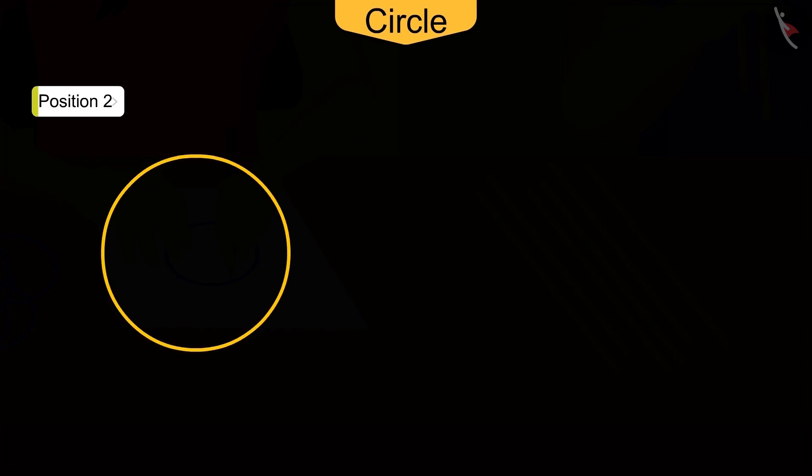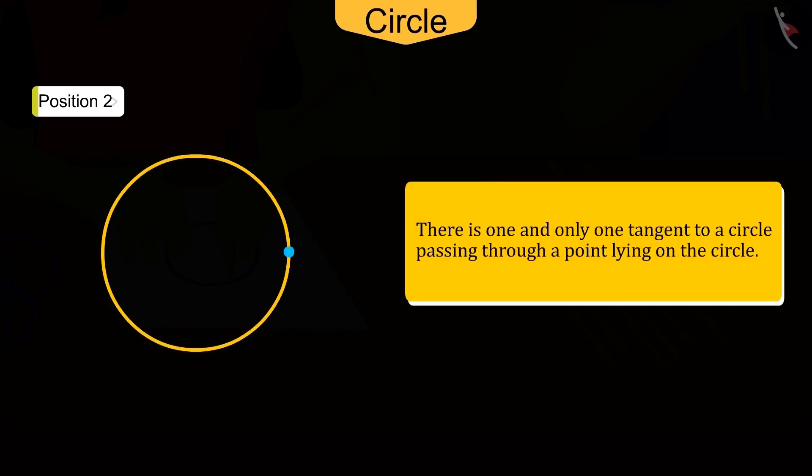You might remember from the previous video that there is one and only one tangent to a circle passing through a point lying on the circle.